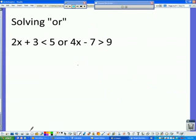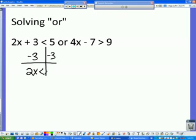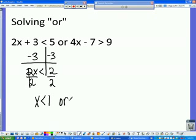On an OR question, the only thing we have to do is just make sure and solve each inequality. So you basically just have two problems to do. So in this one, we're going to subtract 3 first. So 2x is less than 2. Divide by 2, and x would be less than 1. Or,